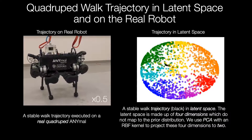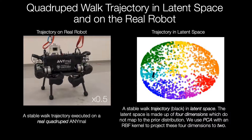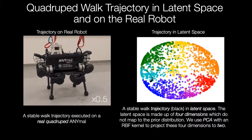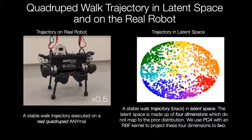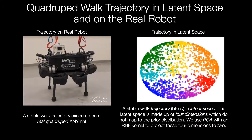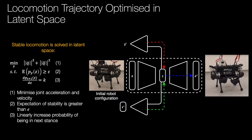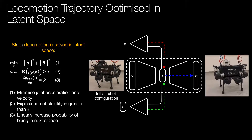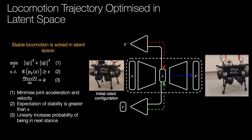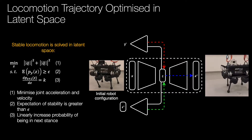We show a trajectory optimized in the structured latent space, which is decoded and run on the real robot. As the robot takes a step, the latent trajectory visits the next stance cluster in sequence. This trajectory is optimized in latent space as follows: since joint angles are an output of our model, we can minimize the velocity and acceleration of them over our walk trajectory. We apply the stability constraint using gradients from our stability predictor and use our stance predictor to linearly increase the probability of being in the next stance, making the robot take stable steps.